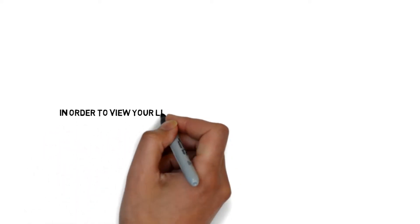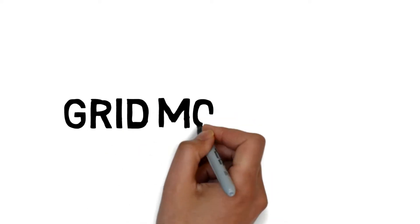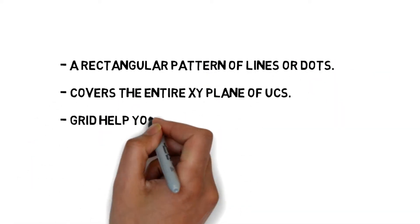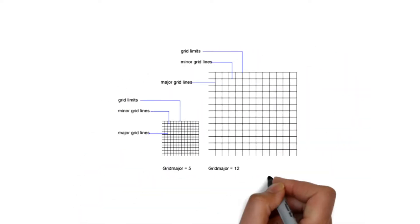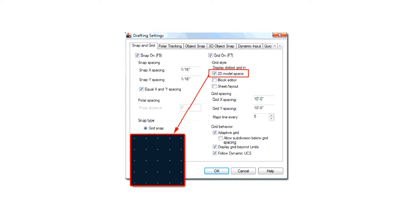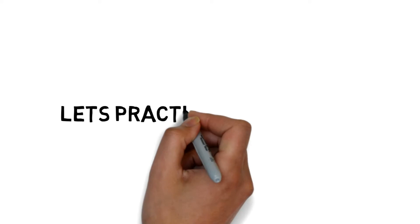In order to view your limits area, you have to make certain settings. Now let's discuss about grid mode. Its short form is F7. It is a rectangular pattern of lines or dots that covers the XY plane of the UCS. Grids help you to align objects and visualize the distance between them. Grids are not displayed when printing.